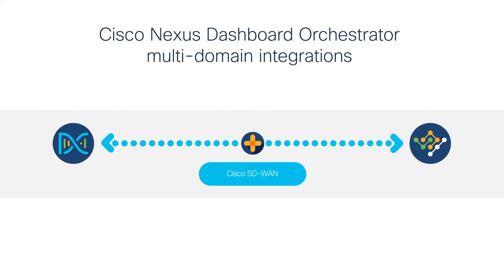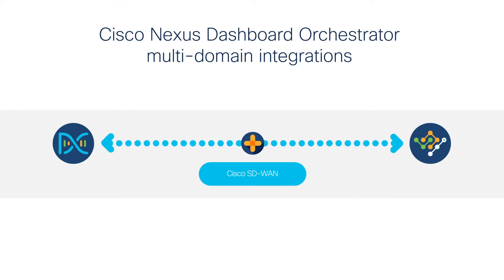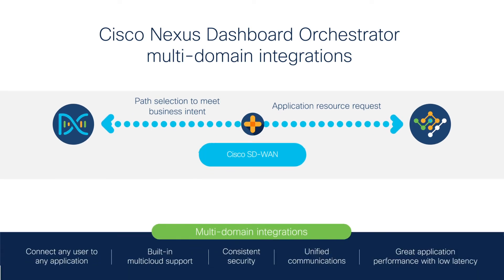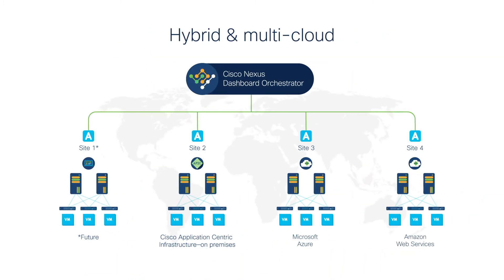For example, in SD-WAN environments, the latest 3.0 release of Cisco Nexus Dashboard Orchestrator helps ensure the best possible application performance by sharing application resource requirements. This integration feature lets you apply application-aware, service-level agreement-based routing when you interconnect multiple data center sites, so you can connect any user to any application, and take advantage of built-in multi-cloud support, consistent security, unified communications, and great application performance with low latency.